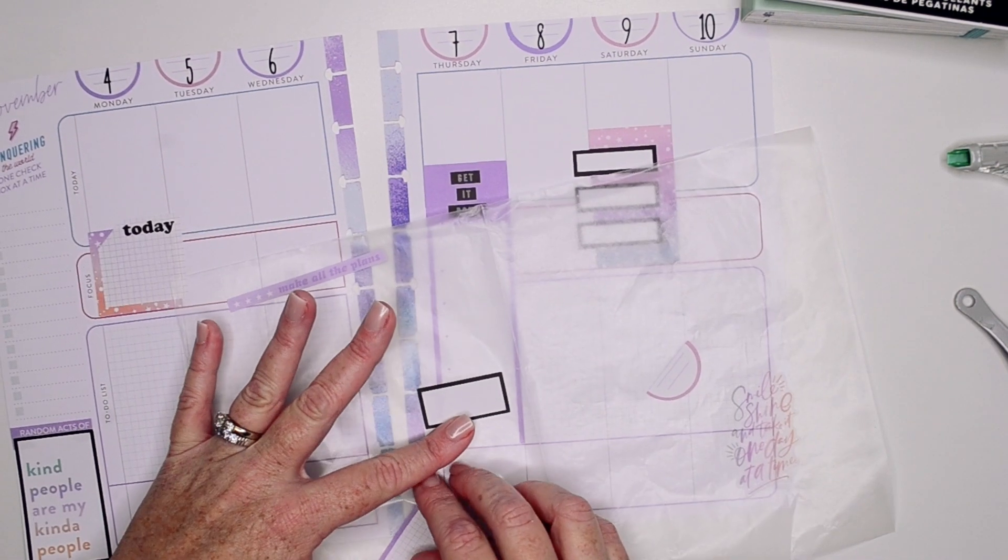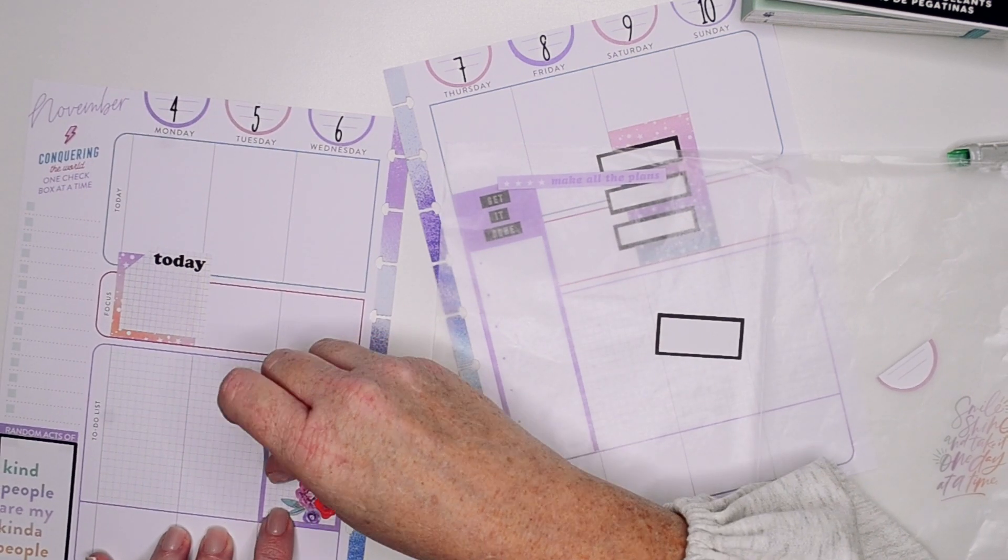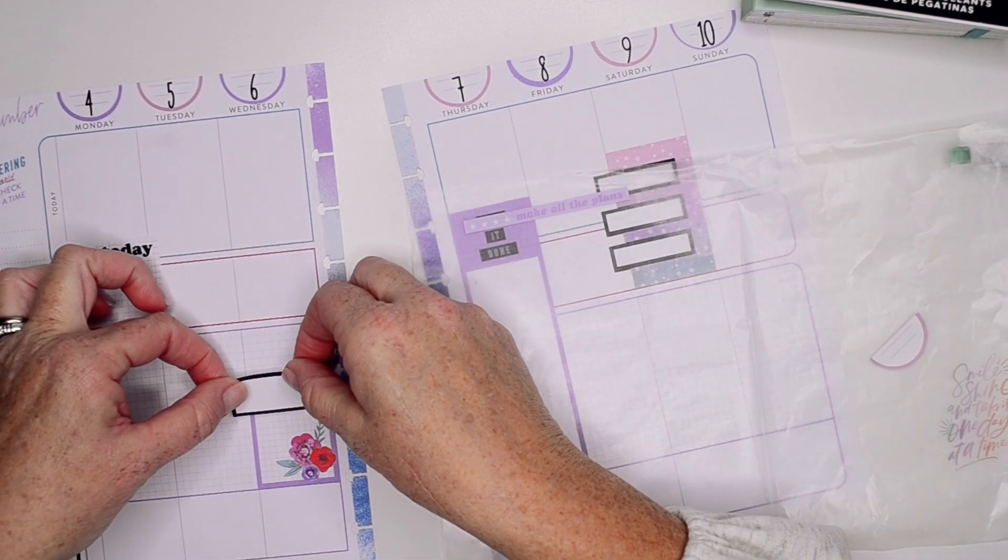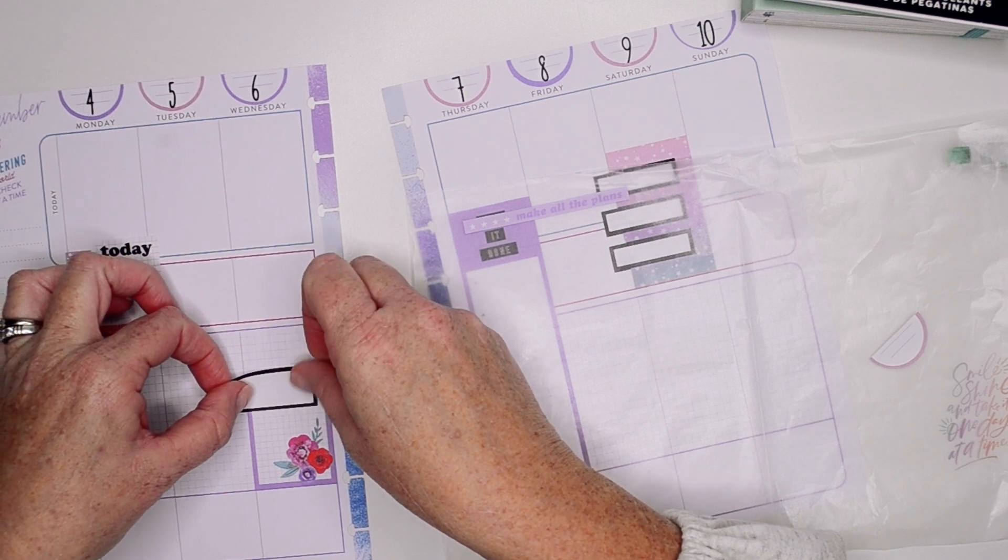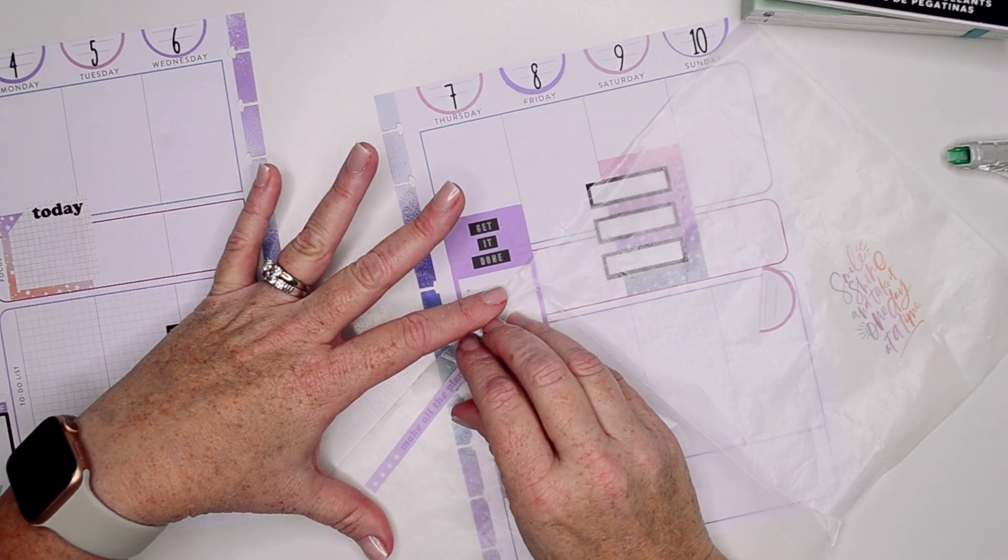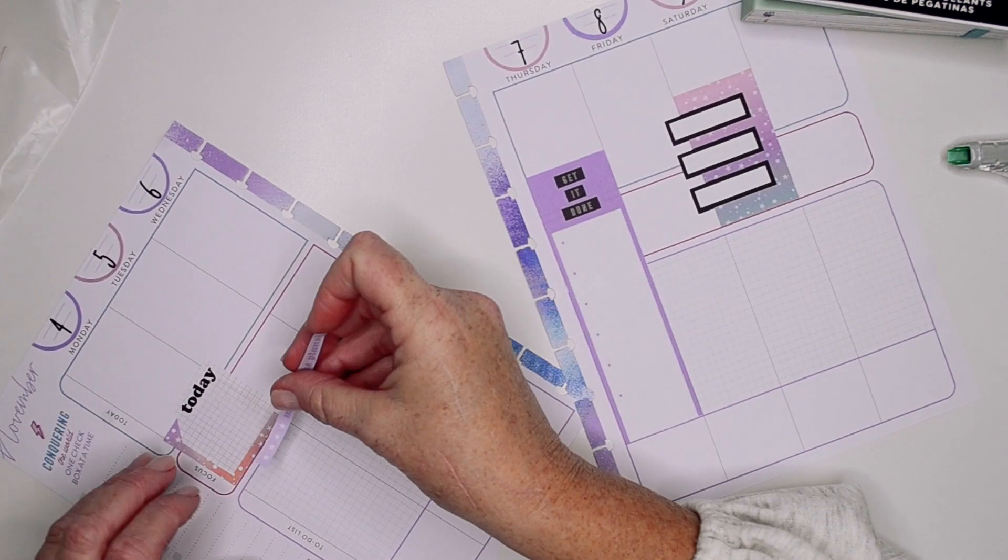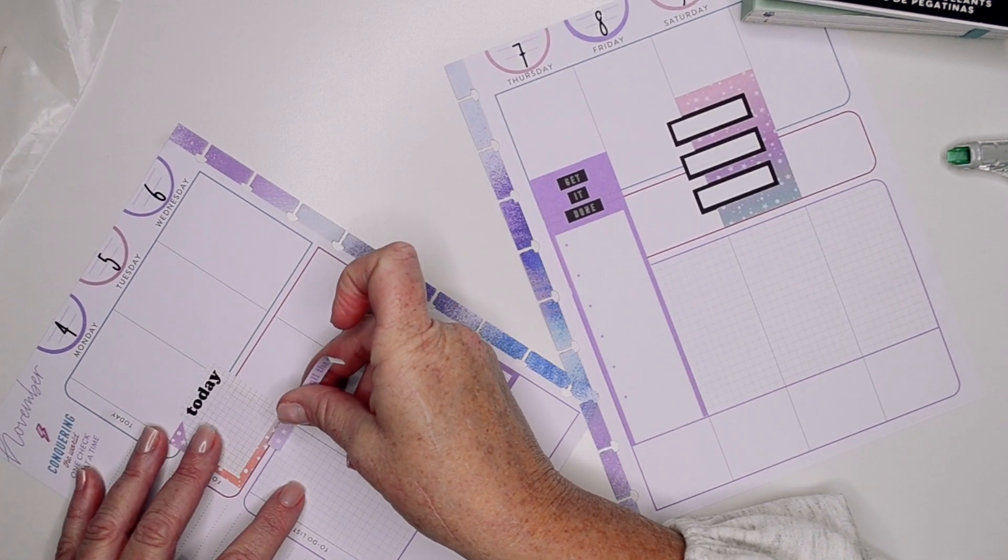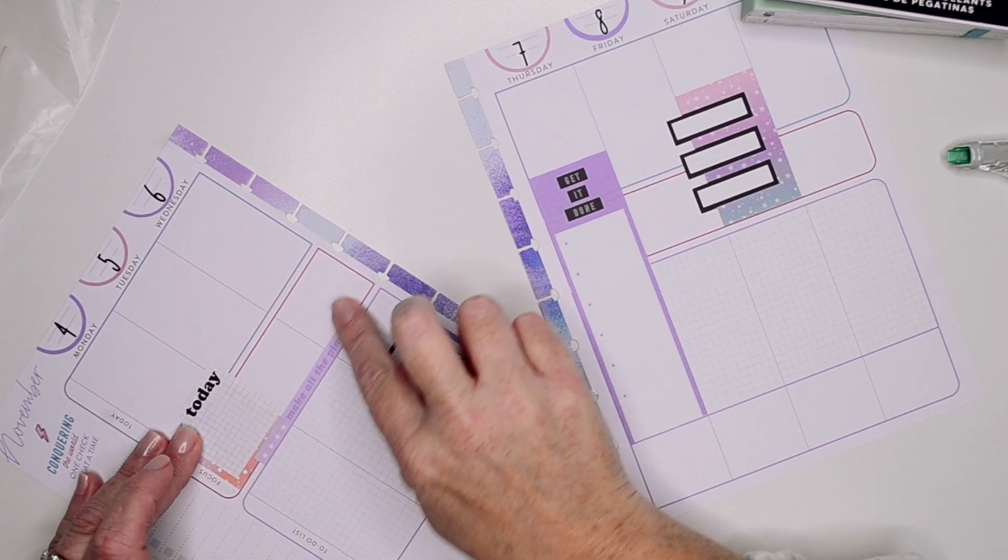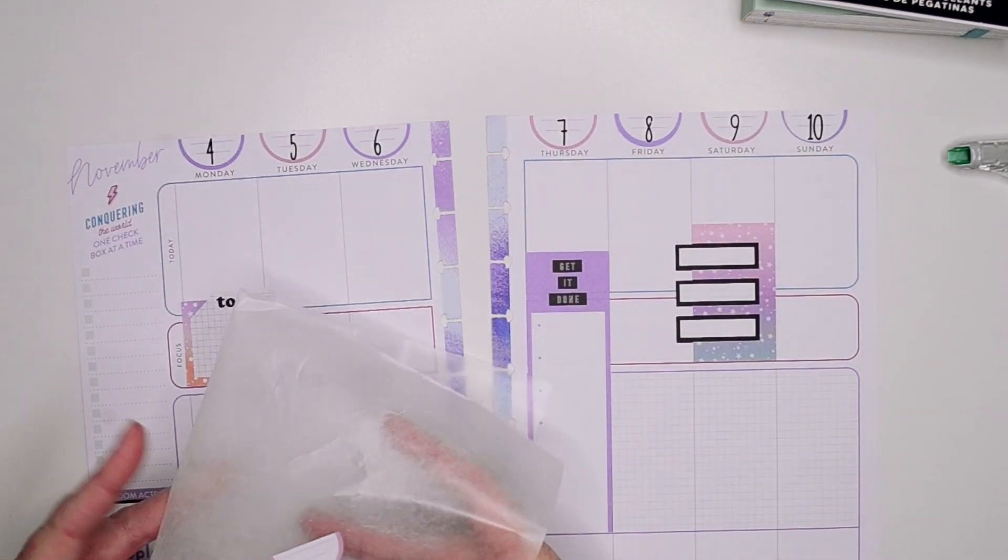Now I was going to use this piece of a box somewhere over here. And then maybe it'll be cute to kind of layer a black box over it so I can write two separate things here. I thought this purple make all the plans banner would be cute somewhere. Let's just kind of layer it here.